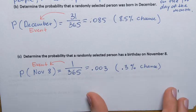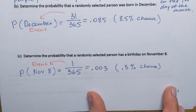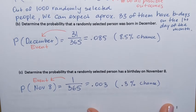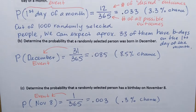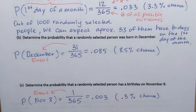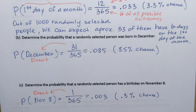That's how we use the equally likely probability formula to calculate the probability of events that are equally likely.